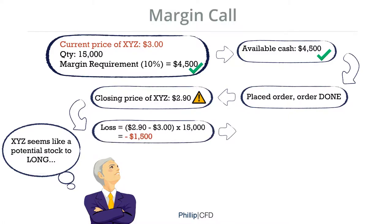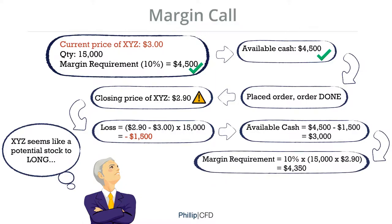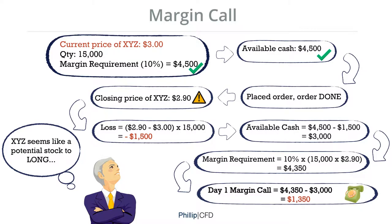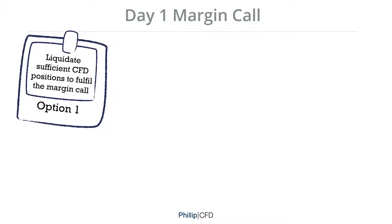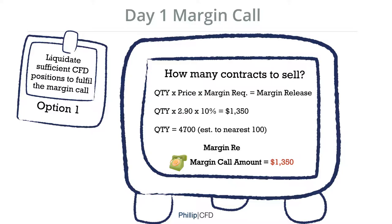As you only have $4,500 in your account to begin with, your available cash will then be $3,000. This is not enough to sustain the margin requirement for your outstanding position, which will trigger a day 1 margin call. When you have been notified of a day 1 margin call, there are 4 options you may choose to take. Option 1: Liquidate sufficient CFD positions to fulfil the margin call. Using the earlier example, where the margin call amount is $1,350, the current price of XYZ is $2.90 and the margin requirement is still 10%.